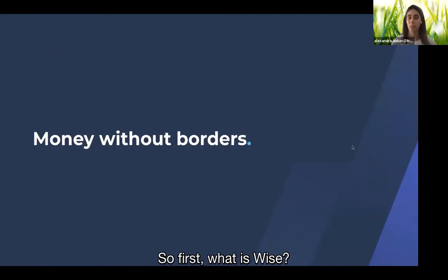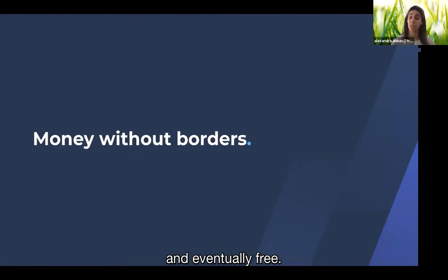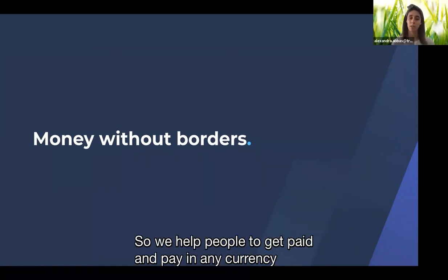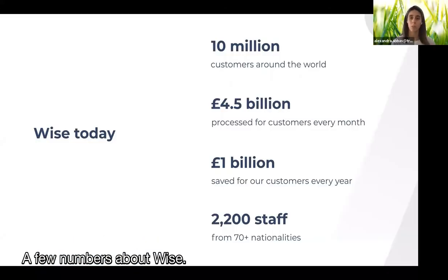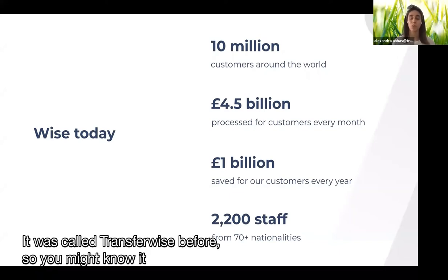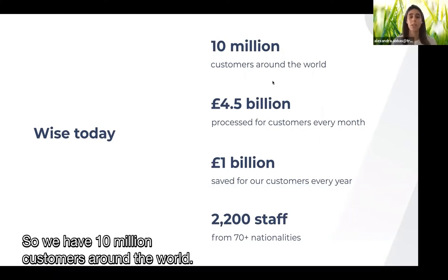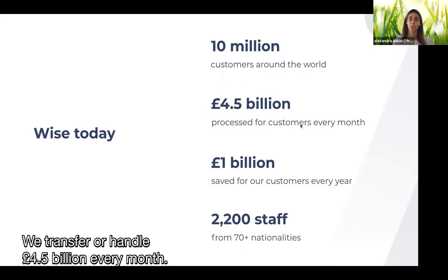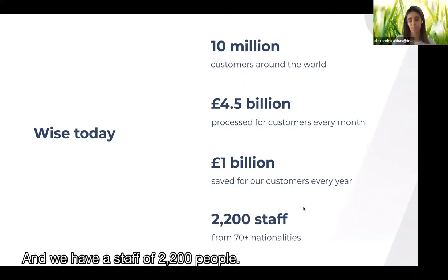So first, what is WISE? WISE is making international transfers instant, transparent, and eventually free. This is our mission — we help people get paid and pay in any currency whenever and wherever. A few numbers about WISE: it recently changed names from TransferWise, so you might know it by that name. We have 10 million customers around the world, we transfer or handle 4.5 billion pounds every month, we save our customers 1 billion pounds every year, and we have a staff of 2,200 people.